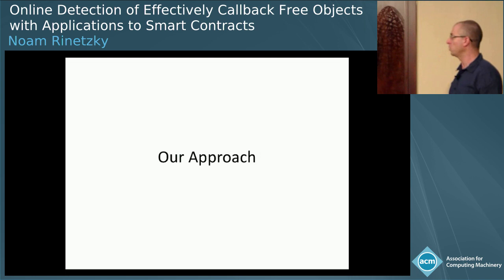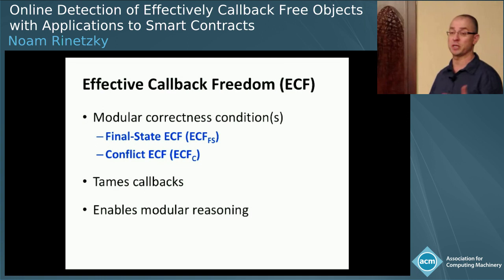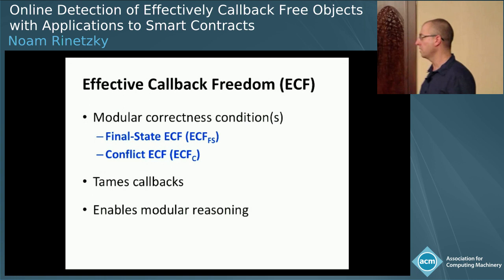So what do we do? In this paper, we give two correctness conditions — two flavors of the same idea — which, if your object satisfies them, allow you to tame the callbacks. You can use callbacks, but the callbacks cannot do nasty things, and thus it enables modular reasoning of the kind we just saw.